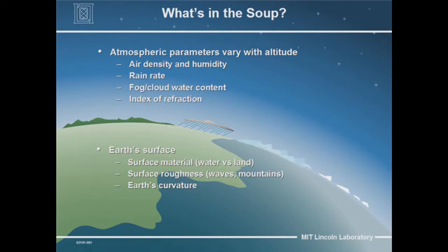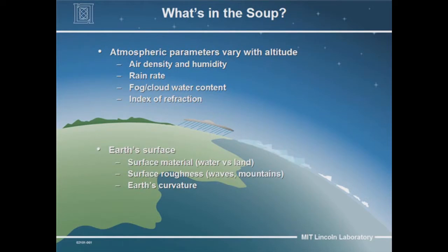With respect to the Earth's surface, that bouncing of the beam off the Earth's surface and reinteracting is going to depend, quite intuitively, on whether the surface is land or sea. A very smooth, calm sea would appear like a mirror, so you'd expect to get a very strong reflection. Whereas if the ground were a forest, you'd expect all kinds of different reflections and a less strong reflection from the ground.